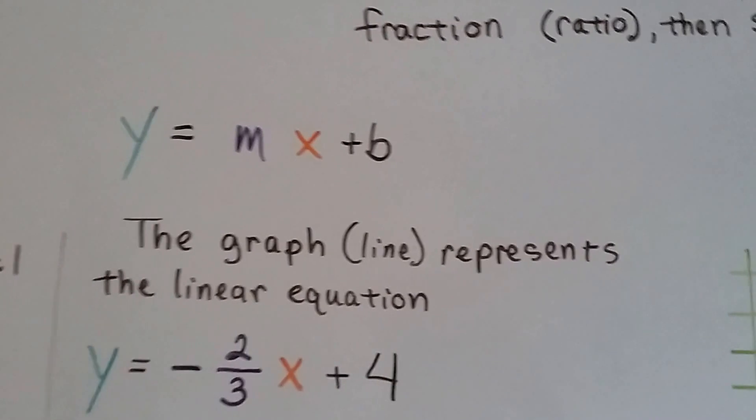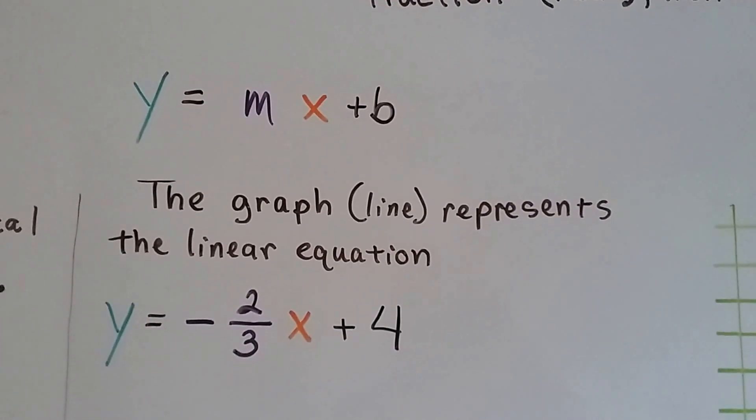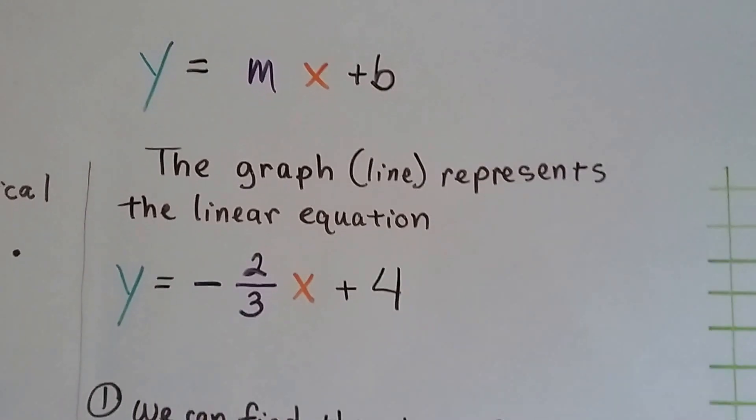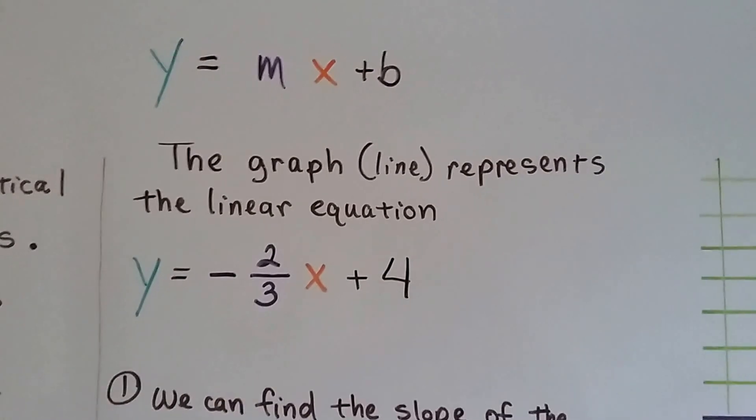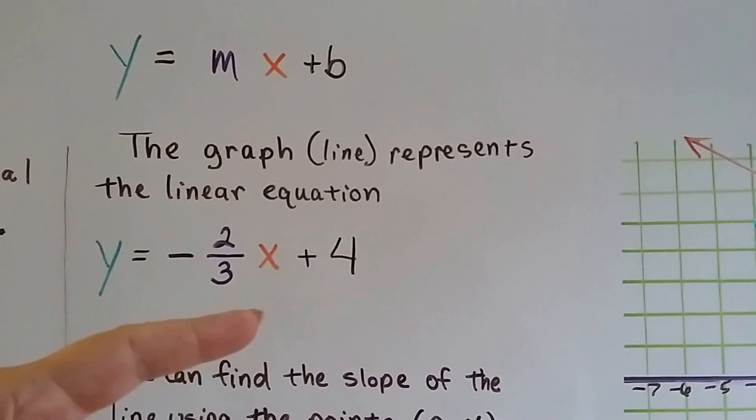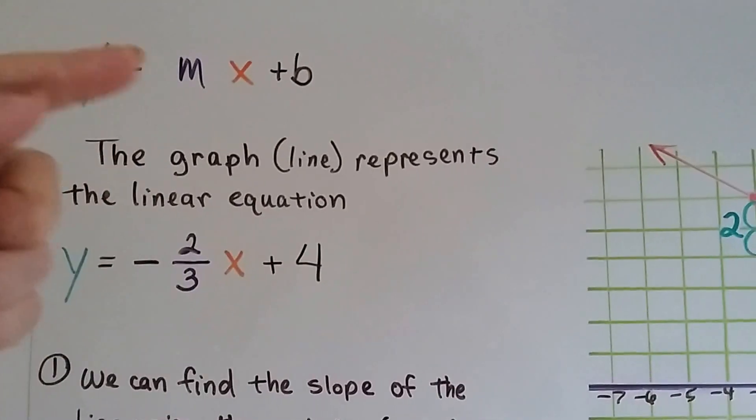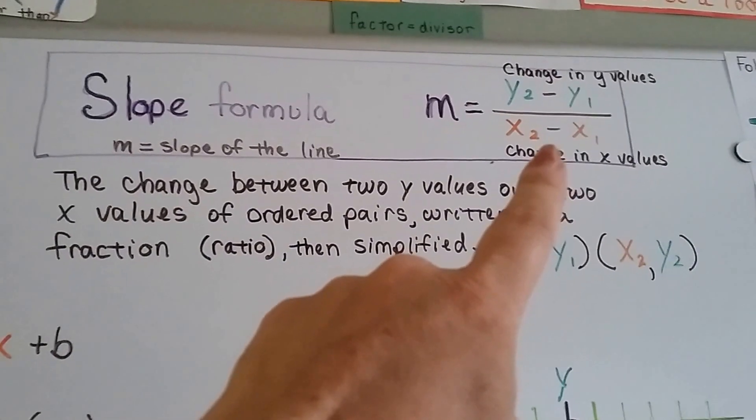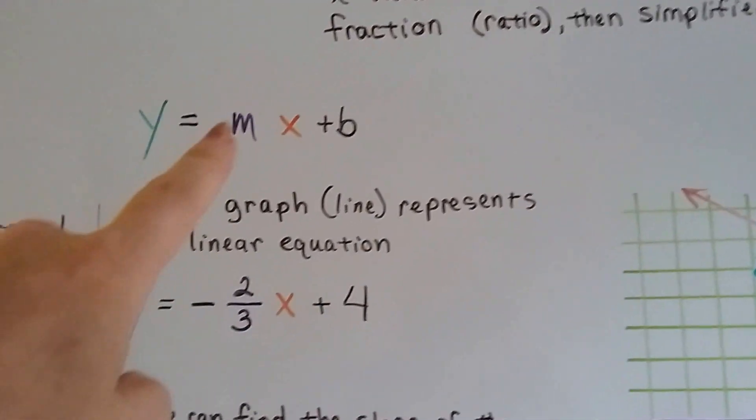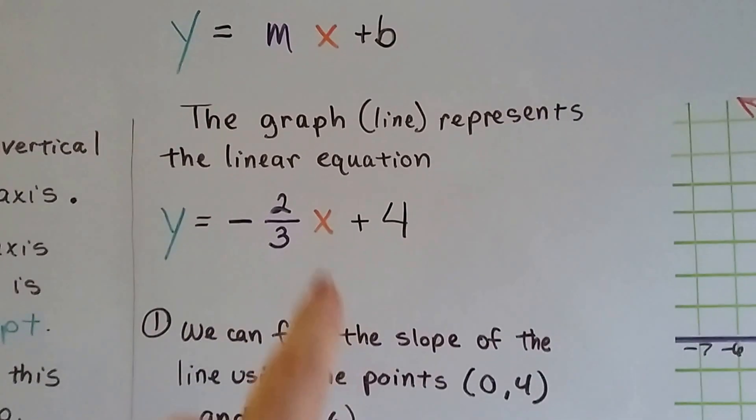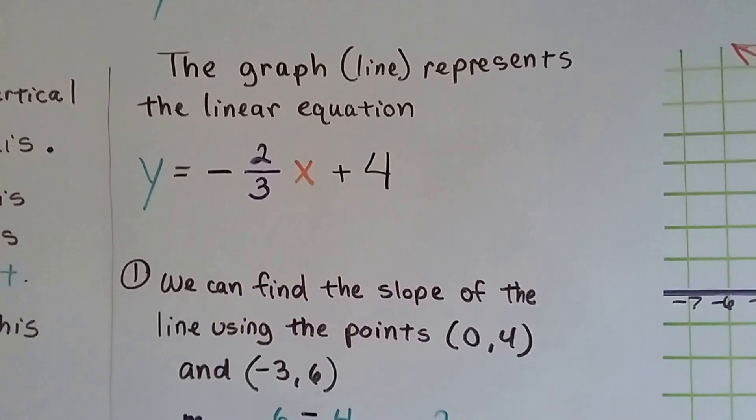So we have this equation y equals mx plus b. And the graph, the line, represents the linear equation y equals negative 2 thirds x plus 4. You can see how these two equations look very similar to each other. We know m is the slope. We learn that from the slope formula, m equals the change in y values over the change in x values. We know the slope is a negative 2 thirds. It needs to be multiplied by x and we need to add 4.